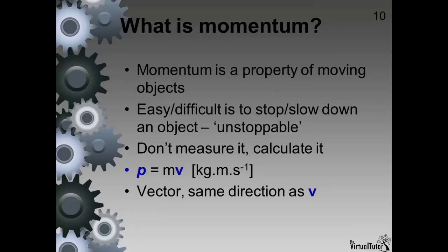Momentum is a vector because velocity is a vector. The direction of the momentum will always be the same as the direction of the velocity used in the formula to calculate the momentum.